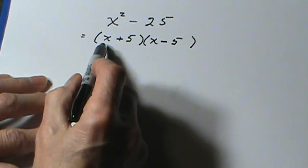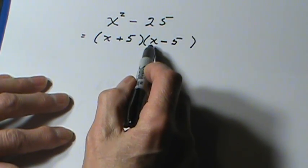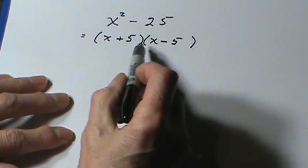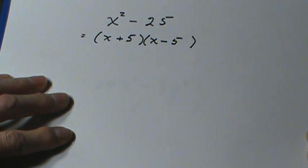And it works fairly simply: x times x is x squared, the outer term is minus 5x, the inner is plus 5x, gives me no x's in the middle, and plus 5 times negative 5 gives me the negative 25 on the end.